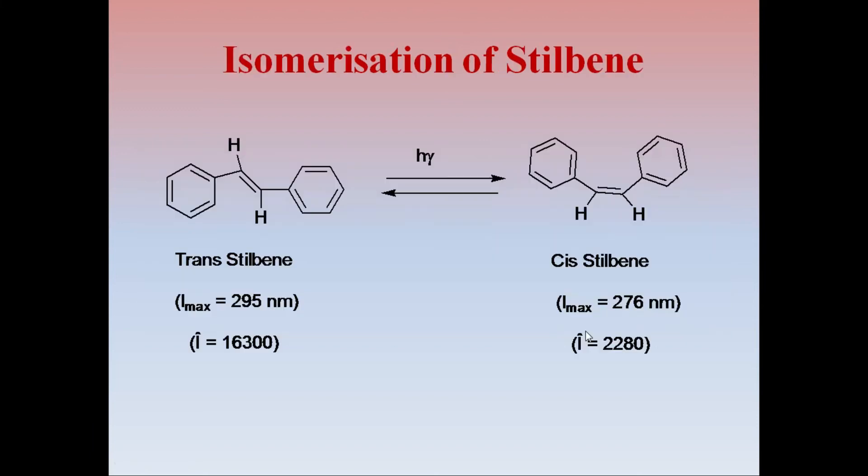Similarly, isomerization of stilbene. Stilbene means 1,2-diphenyl ethene, which on irradiation of trans-stilbene in hexane using UV light results in formation of cis isomer. Their maximum wavelength absorption and epsilon value will help us to predict their presence.